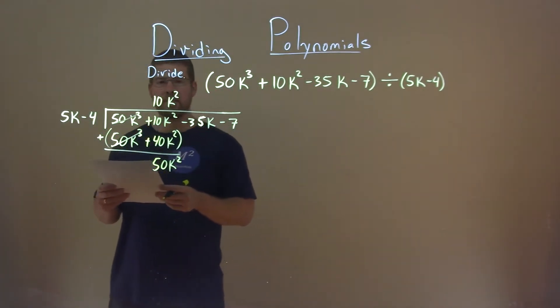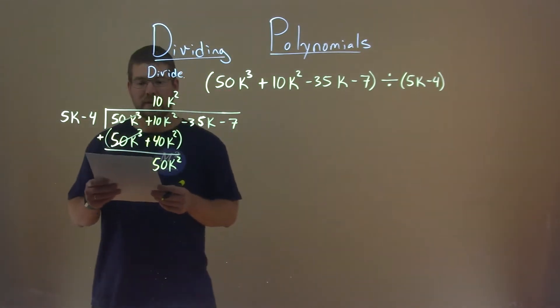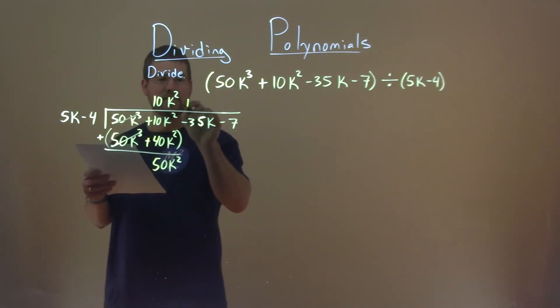And so now we're going to do the same thing again. What times 5k gets me 50k squared? And that's just a 10k. A lot of 10s here.